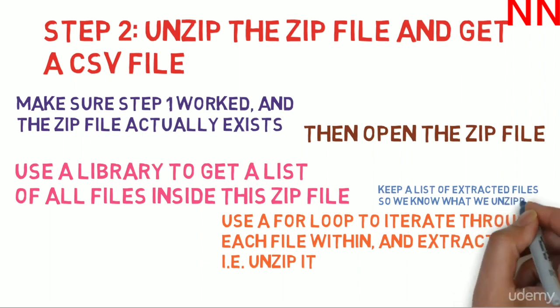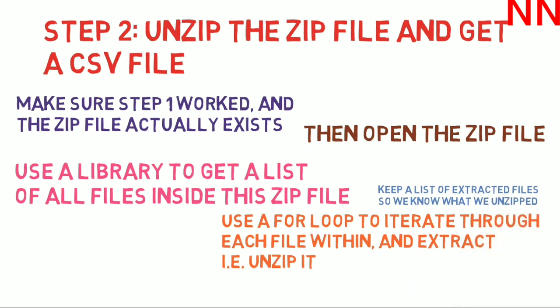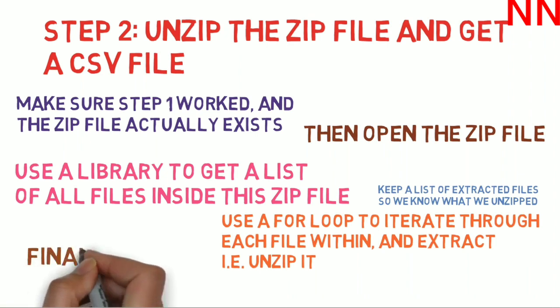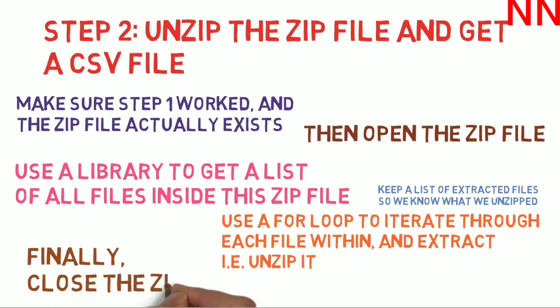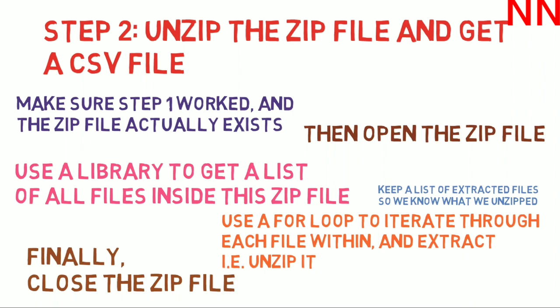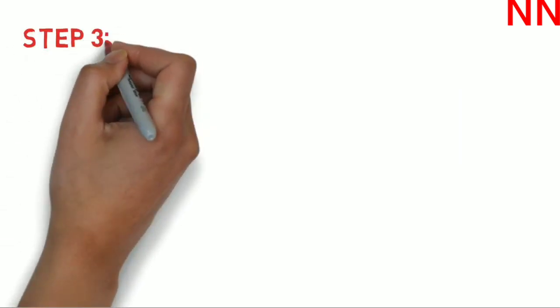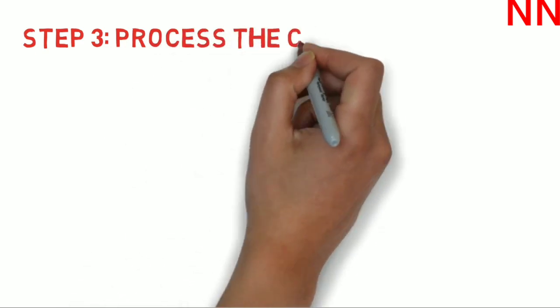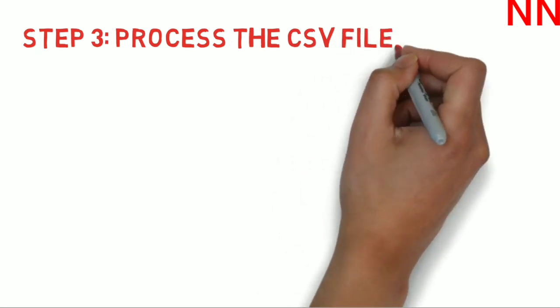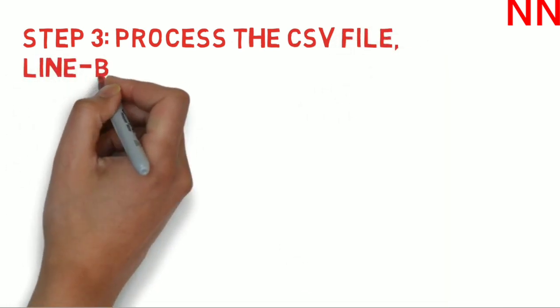Remember to close the zip file once you are done with it — you have to close the barrel, otherwise the contents can get contaminated. It turns out this zip file will only have one CSV file, so we'll take that CSV file and process it line by line.